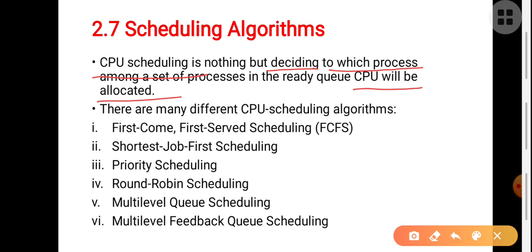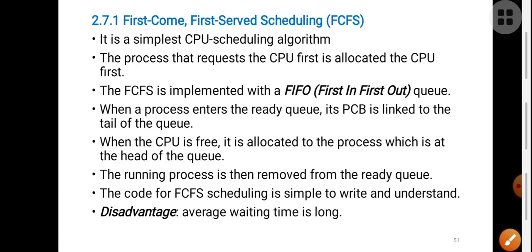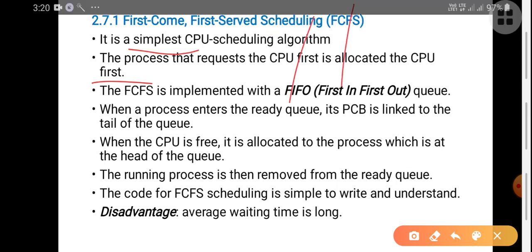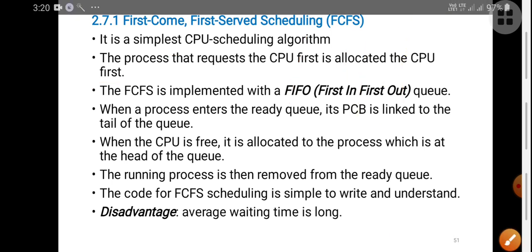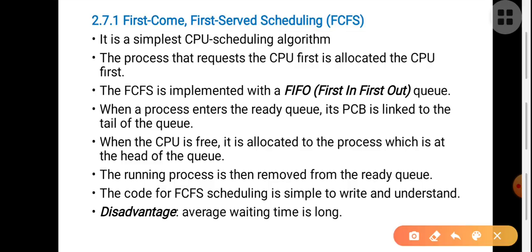The First Come First Served scheduling algorithm, FCFS, is the simplest CPU scheduling algorithm. The process which requests the CPU first will be allocated the CPU first — that is, a first come first served basis. FCFS is simply implemented using one simple data structure: a queue, particularly a FIFO queue, that is a First In First Out queue.